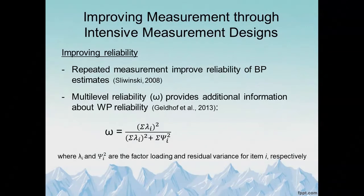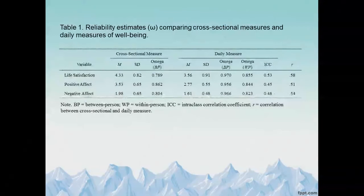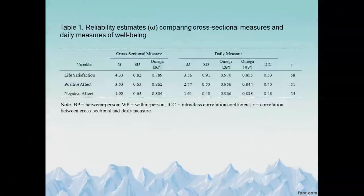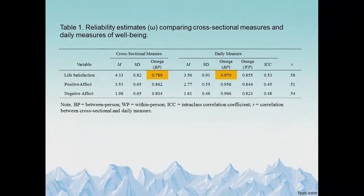Measuring more frequently also improves reliability. Having several measures repeated over time improves your between-person reliability, and it also allows you to estimate reliability at the within-person level. In our example where participants completed cross-sectional measures of life satisfaction, positive affect, and negative affect alongside a 14-day daily measure, the reliability of the between-person design is quite a bit higher when using these intensive measurement designs — which happens simply because you have more frequent assessments.